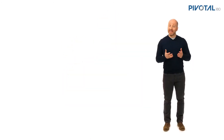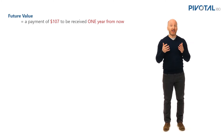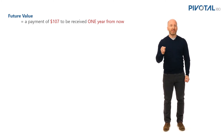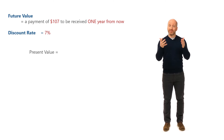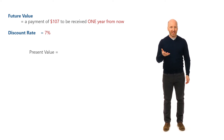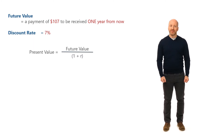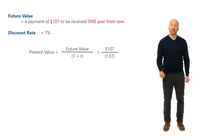Let's take an investor and we'll call him Hayden. Hayden has the lucky opportunity to receive a payment of $107 exactly one year from now. That $107 is called a future value, or FV. Let's assume that Hayden's discount rate is 7%. An investor like Hayden would simply take the future value of $107 and divide it by one plus the discount rate, often abbreviated as r. In this case, one plus r is simply 1.07.